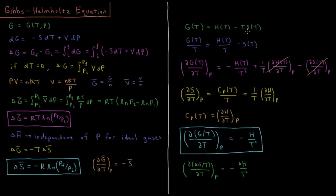If we divide both sides by temperature, G(T) over T is equal to H(T) over T minus S(T).